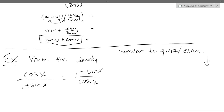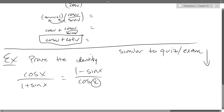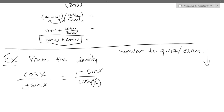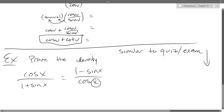What about x values that make you divide by zero? What x value makes cosine of that x value zero? Cosine of pi over 2 is zero, so pi over 2 would make the right side undefined.